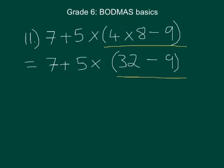So we're just going to subtract 9 from 32, which is going to be 23. So we've now just got the 23, and that's being times by 5 plus 7.